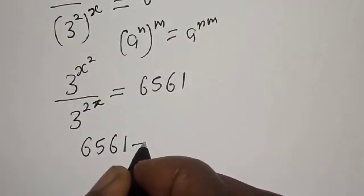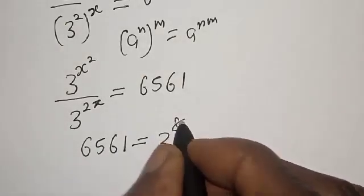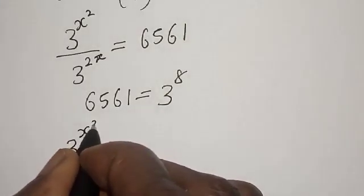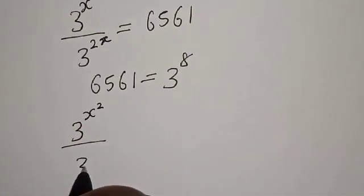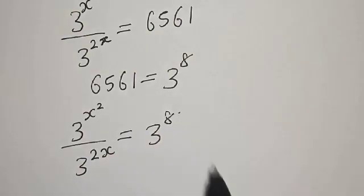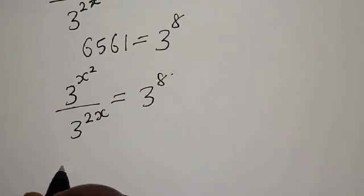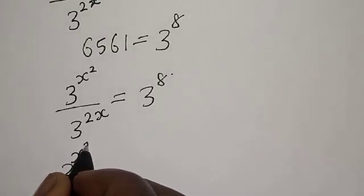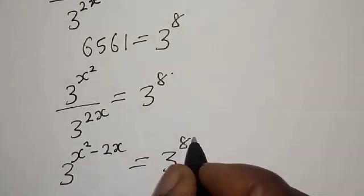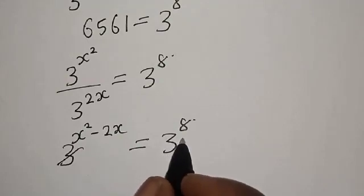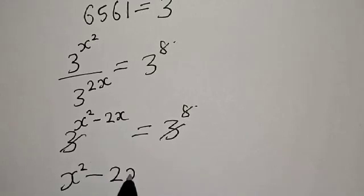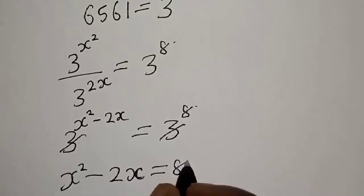We have 3 raised to power s squared over 3 raised to power 2s is equal to 3 raised to power 8. Our left-hand side becomes 3 raised to power s squared minus 2s is equal to 3 raised to power 8.